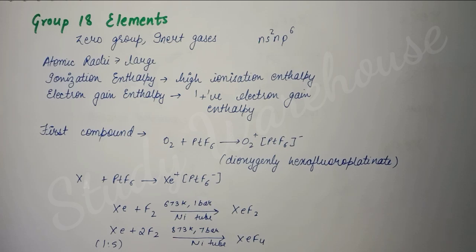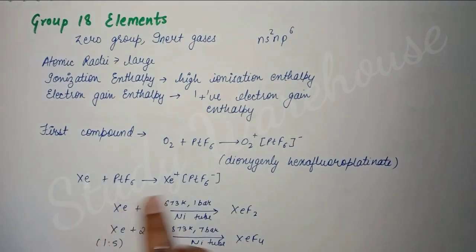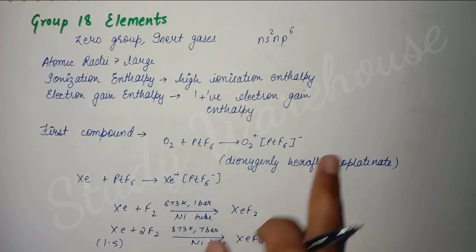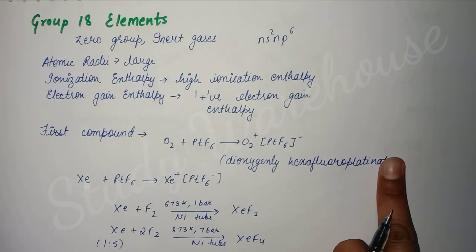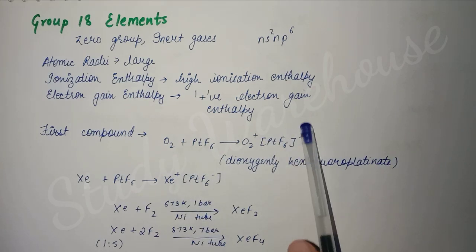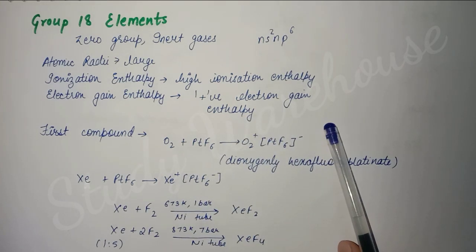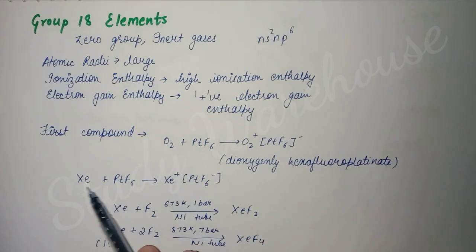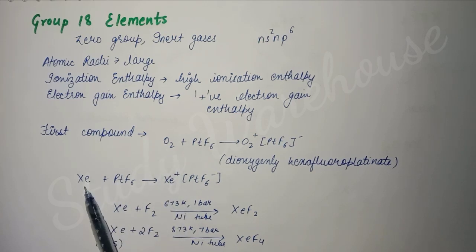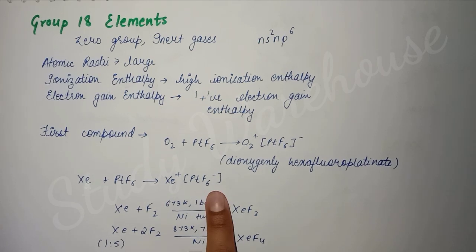The first compound formed was the xenon compound, formed with the help of platinum hexafluoride. First, the scientist did this reaction and found that a compound was forming - orange or red colored. When they saw this compound forming, both xenon and oxygen have almost the same first ionization enthalpy. So they thought if oxygen is reacting, xenon also has the same ionization enthalpy, which means it will also show reaction. So they made it react and got the same red compound again. This was the first compound formed from a noble gas.